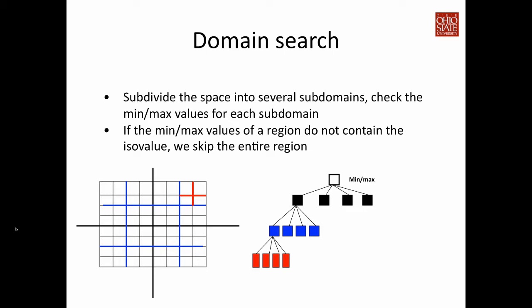To search for the isosurface cells, we start from the root of the tree. If the root's min-max value contains the iso value, we know the isosurface exists in the domain. We then check each of the four children and focus on sub-areas whose min-max range contains the iso value. In the example, we start from the top level, go to one of the black nodes, check again whether the min-max value contains the iso value, go to one of the blue nodes, and finally arrive at the base level with the red nodes, extracting the isosurface within each. This is very efficient because we can skip large portions of the domain without examining every cell.